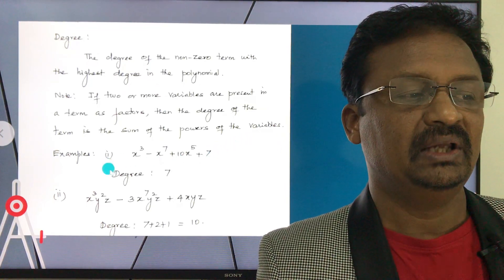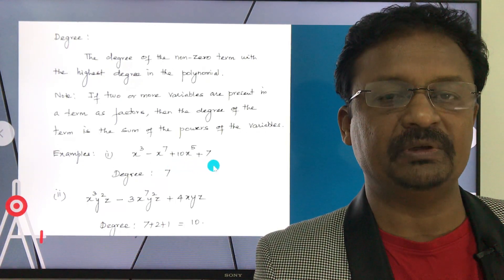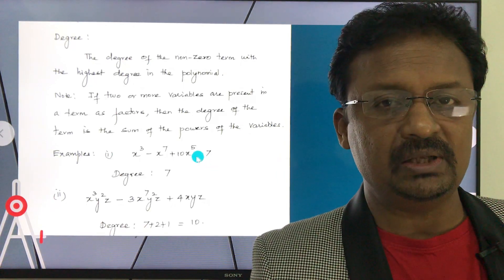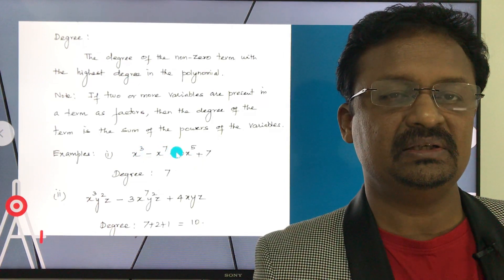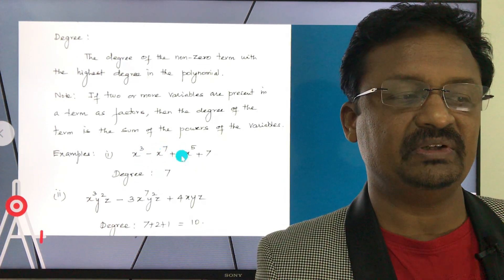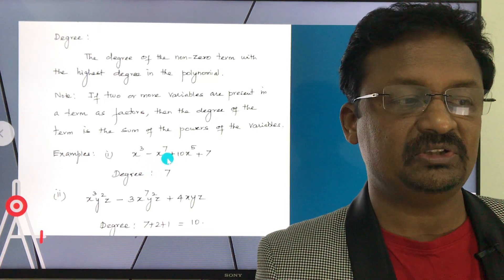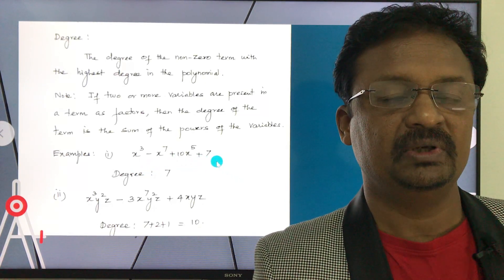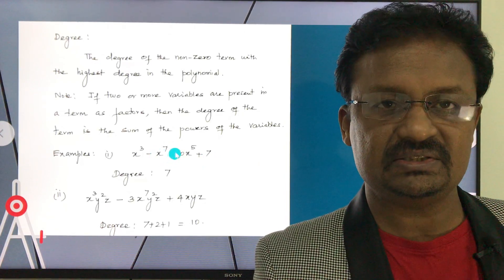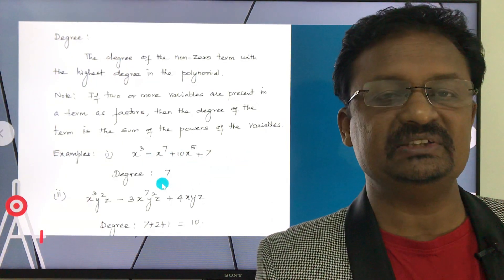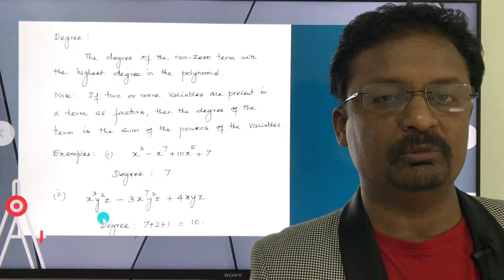For example, in x³ - x⁷ + 10x⁵ + 7, this is a one-variable polynomial with variable x. The highest power is 7, so 7 is the degree of this polynomial. There are terms x³, x⁷, x⁵, and a constant, but we consider the highest power — which is 7 — as the degree.